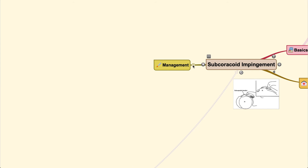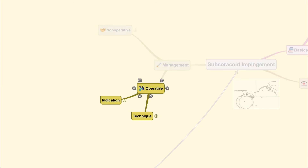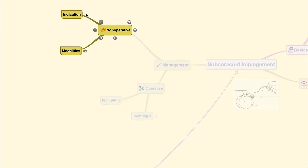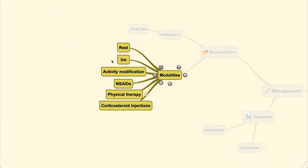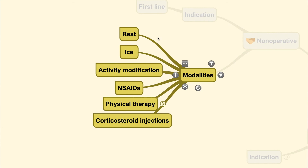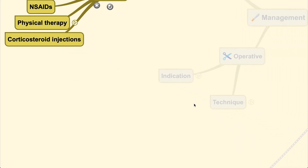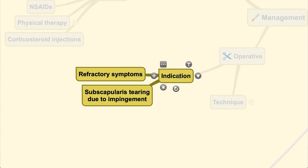Once the diagnosis is confirmed, you move on to the management plan, which includes non-operative and operative techniques. Non-operative treatment is the first line and may include rest, ice, activity modification, NSAIDs, physical therapy, or corticosteroid injections. Operative techniques are indicated only in refractory cases where symptoms remain evident and subscapularis tearing is due to impingement.